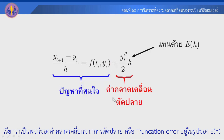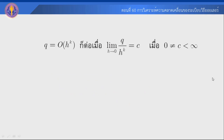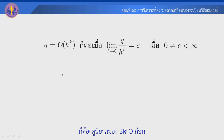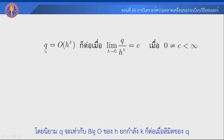The Short Truncation Error, which is e_h. We will show this using Big O notation. Big O is defined as follows: Q is of the order Big O of h...